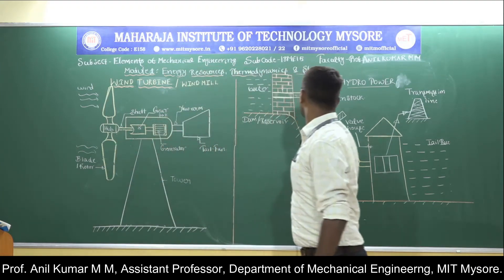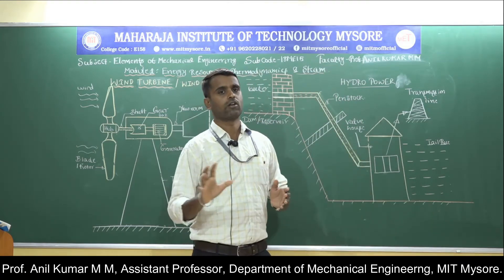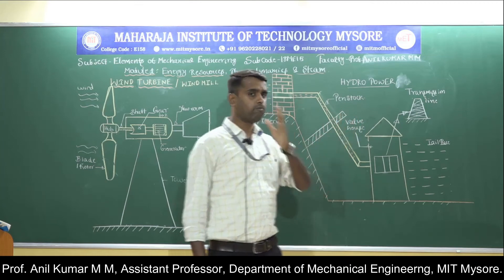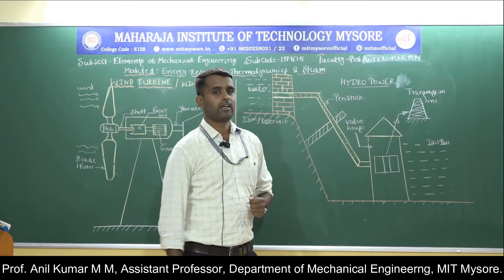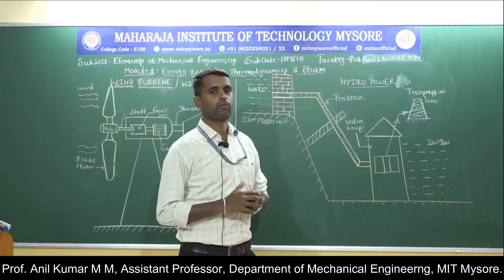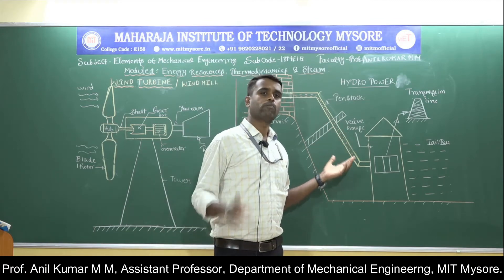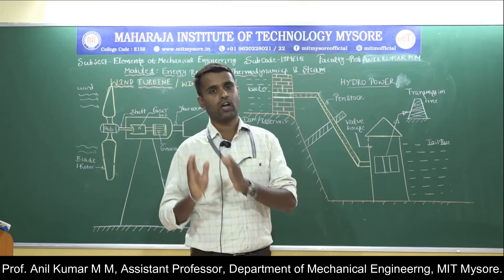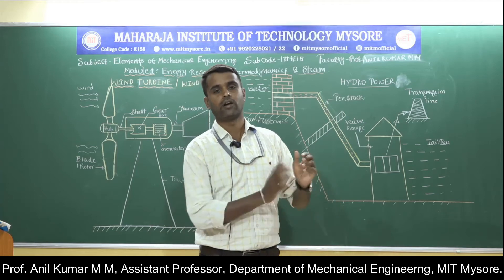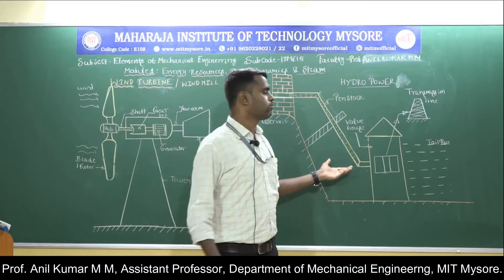Next, we move on to hydro power. Hydro power is nothing but the energy associated with the flowing of water, also called hydro energy or water energy. Water consists of both potential as well as kinetic energy, and that energy can be converted into electrical energy — that is called hydro power. The hydro power plant is a place used to convert hydro energy into electrical energy.